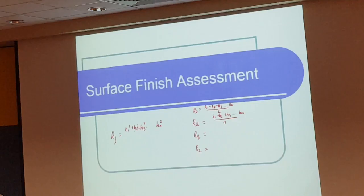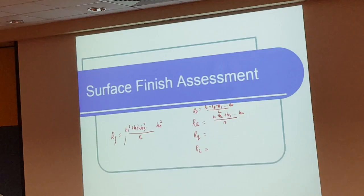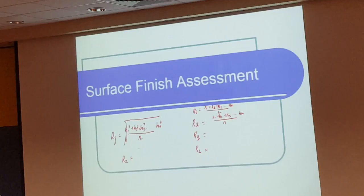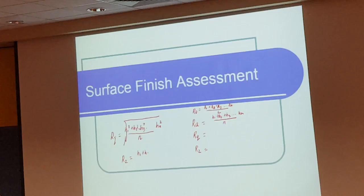Then the Rq will be equals to H1 square plus H2 square, you need to draw a diagram, H3 square and so on up to Hn square, divided by the number of data height, that's square root. That's why it's called root mean square.